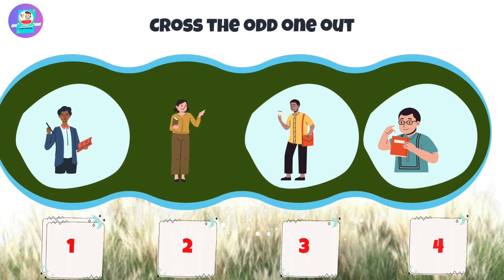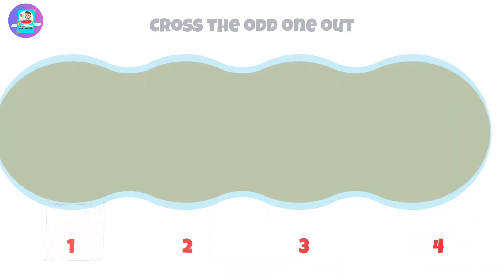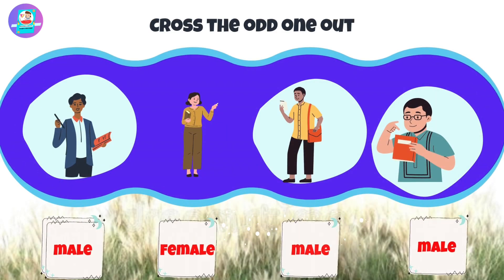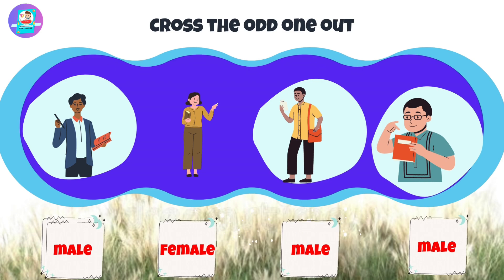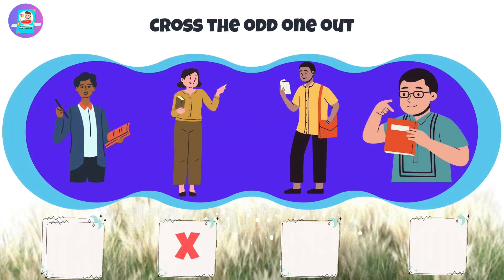Okay, let's check first. When we see here we have 3 males and a female that is odd. So put a cross on the female.